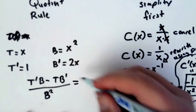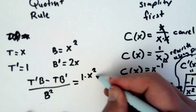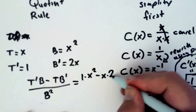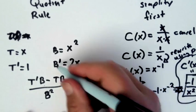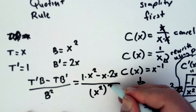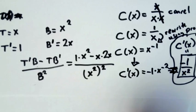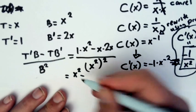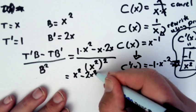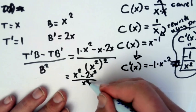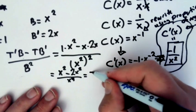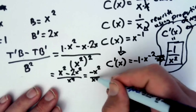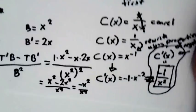The important thing is you just plug in the pieces. So 1 times x squared minus x times 2x all over x squared quantity squared. And that's kind of, I don't like the way that looks. So I'm going to say that's actually equal to x squared minus 2x squared all over x to the fourth, which is minus x squared over x to the fourth, right? Let's take a second because that was a lot of steps.